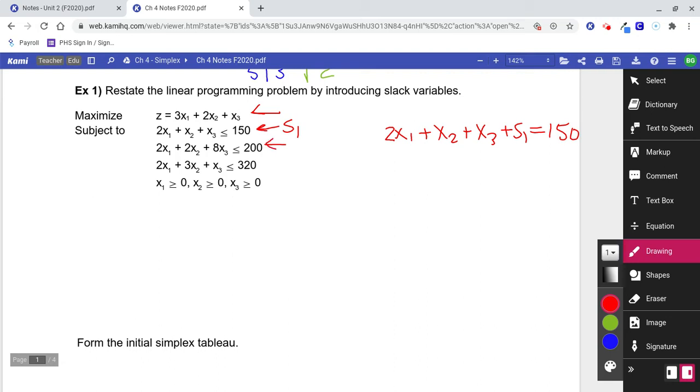So we look at the next one. The next one needs a different slack variable. So let's call that one S2. So I'd have 2X1 plus 2X2 plus 8X3 plus S2 equals 200.